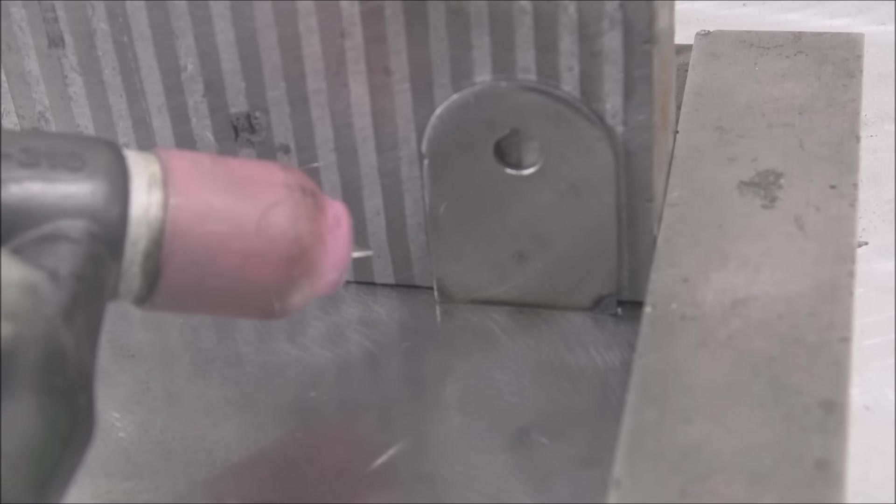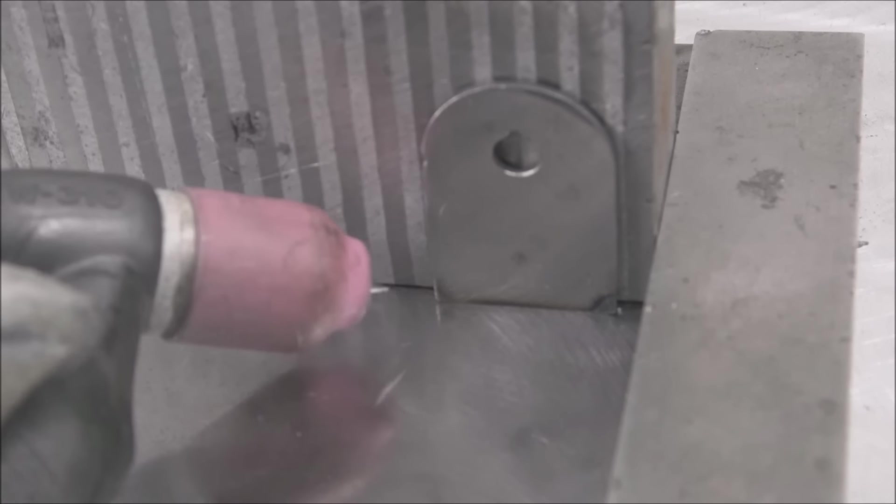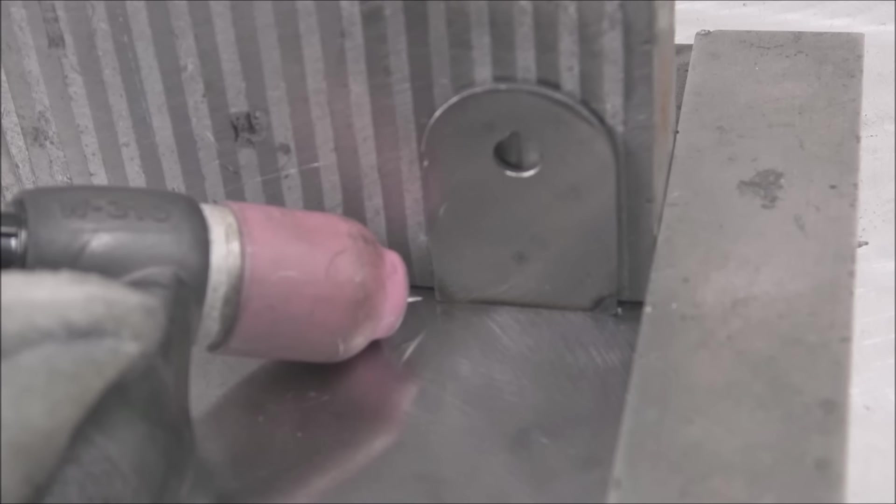Then to make tack welding easier, you can just rest the cup on the base metal so you're not shaking around. Just put it right where you want it. Then if you need to, you can rock up and down a little bit like this.